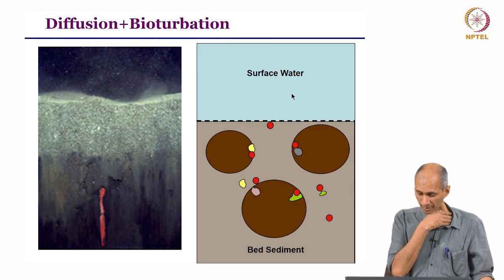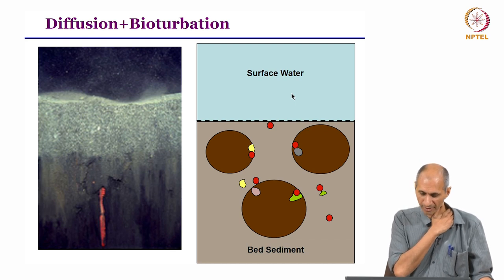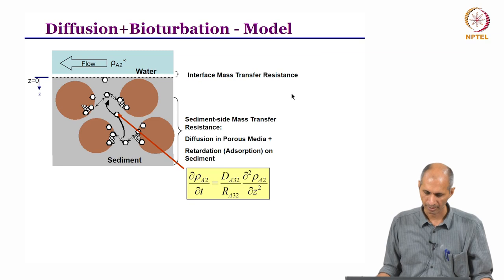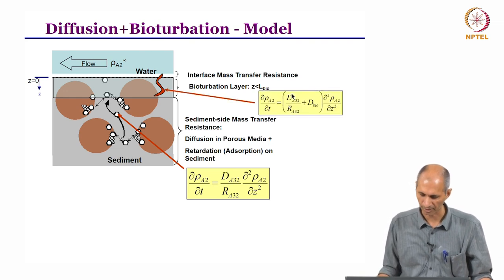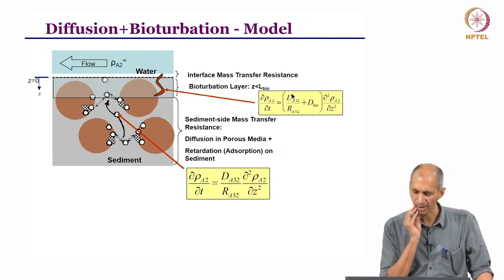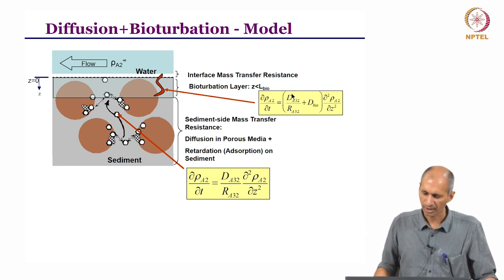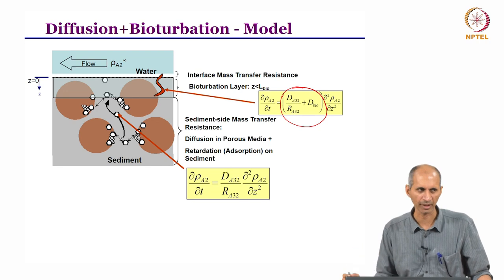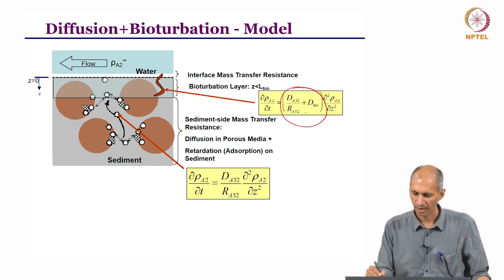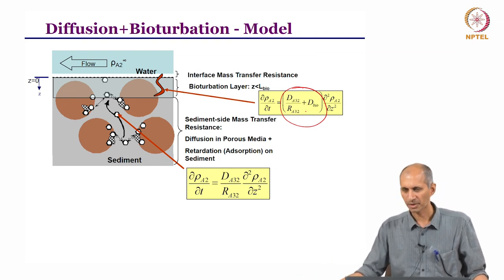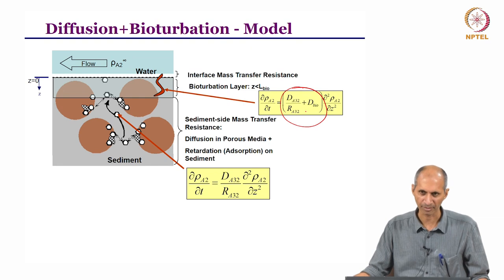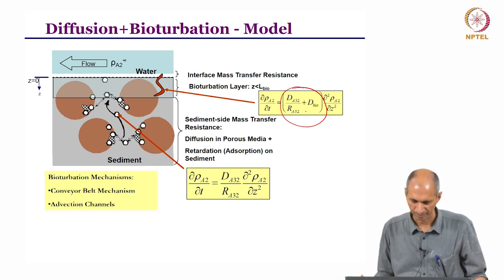For diffusion with bioturbation, there is a worm inside the sediment. The bioturbation material is taken and transported directly. In the model, the bioturbation layer is seen as a separate layer, and within that the diffusion is enhanced by bioturbation. You could have an effective bio-diffusion coefficient which is a combination of both. It is difficult to justify using the same equation because diffusion occurs in a porous medium and bioturbation does not — they are not the same process.